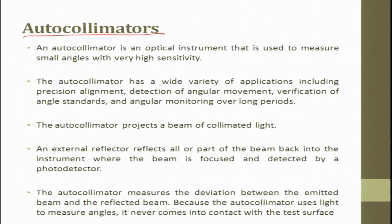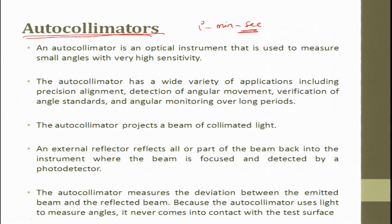The next topic is the auto collimator. An auto collimator is an optical instrument used to measure small angles to very high precision. Previously we measured in degrees, then minutes, then seconds — for very high sensitivity at the second or minute level, we use auto collimator. It has a wide variety of applications including precision alignment, detection of angular movement, verification of angle standards, and angular monitoring over long periods. In an auto collimator, a beam of collimated light and its reflection is used.